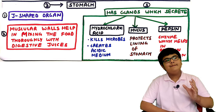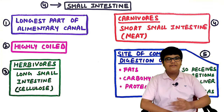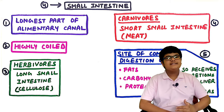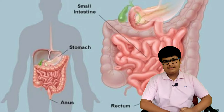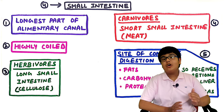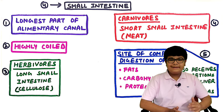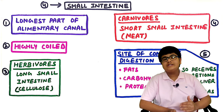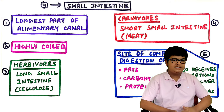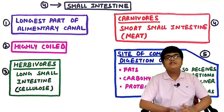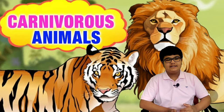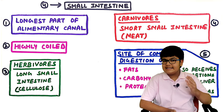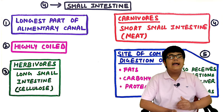Fourth, the small intestine - it is the longest part of the alimentary canal and is highly coiled. Its length varies in different organisms. Herbivores have a long small intestine to digest cellulose, which is very hard to digest. Carnivores have a shorter small intestine because they digest meat, which is easier to digest.